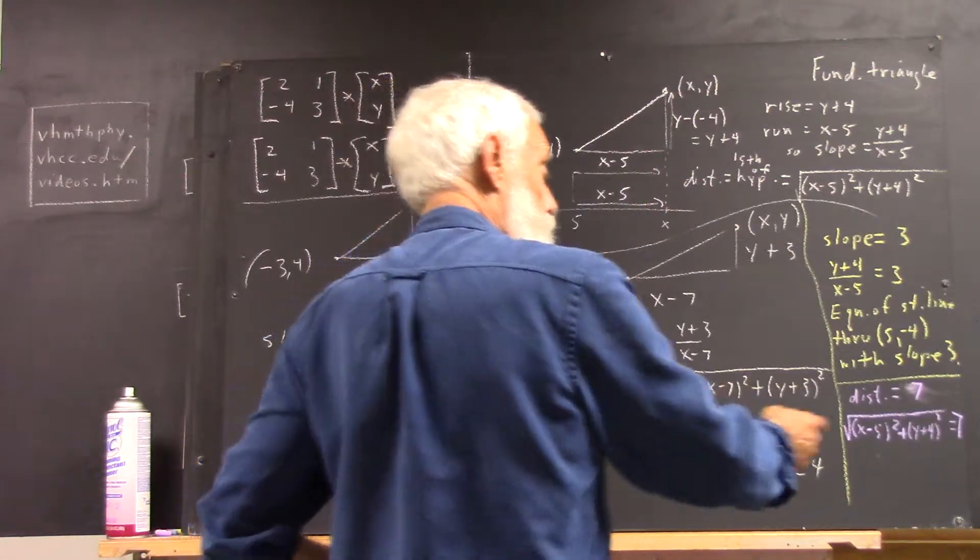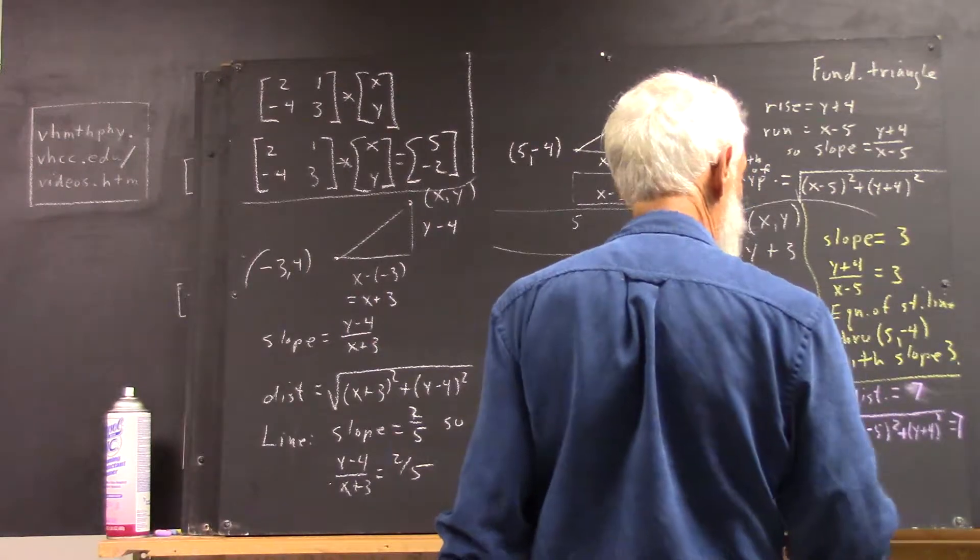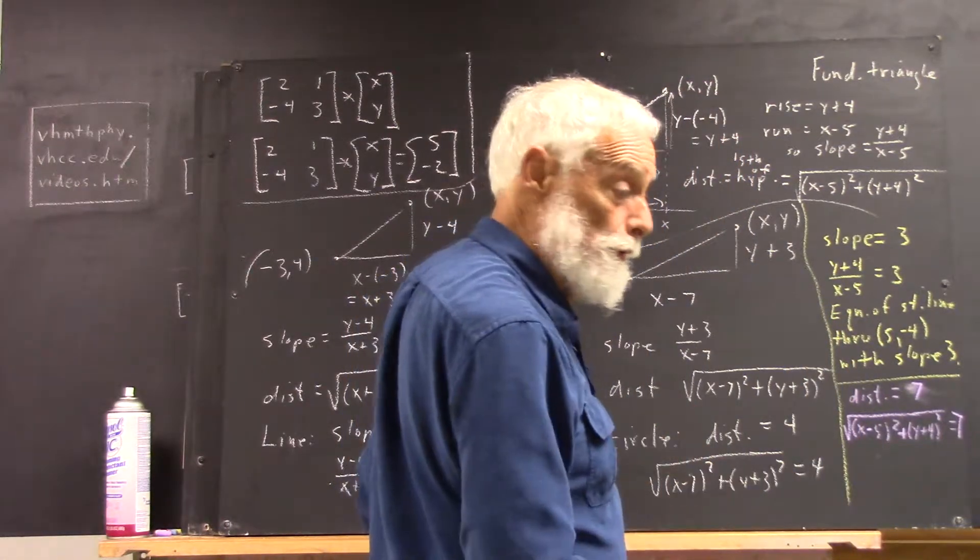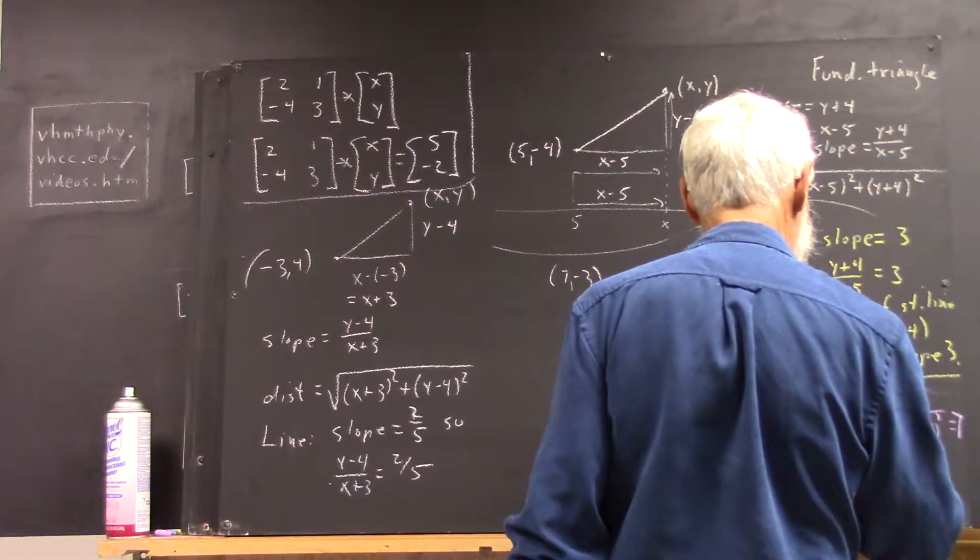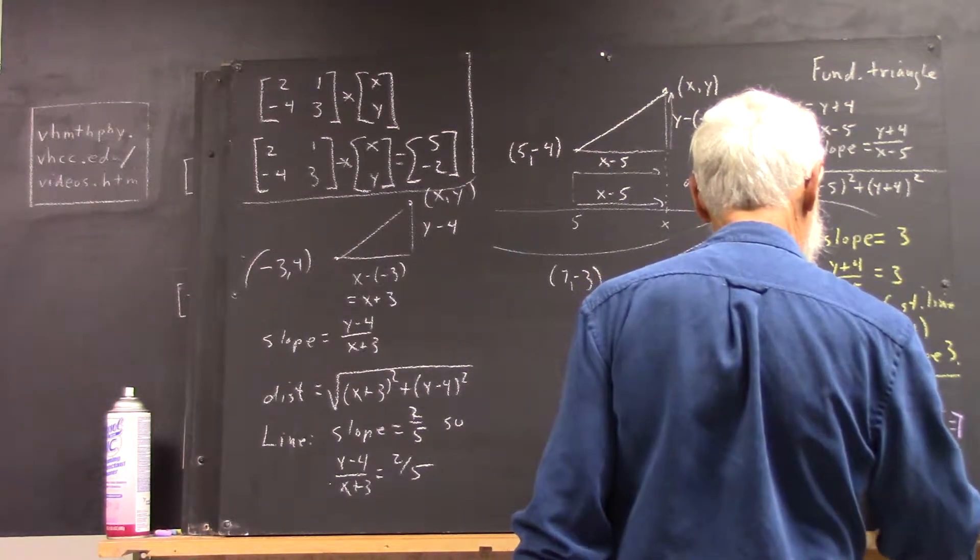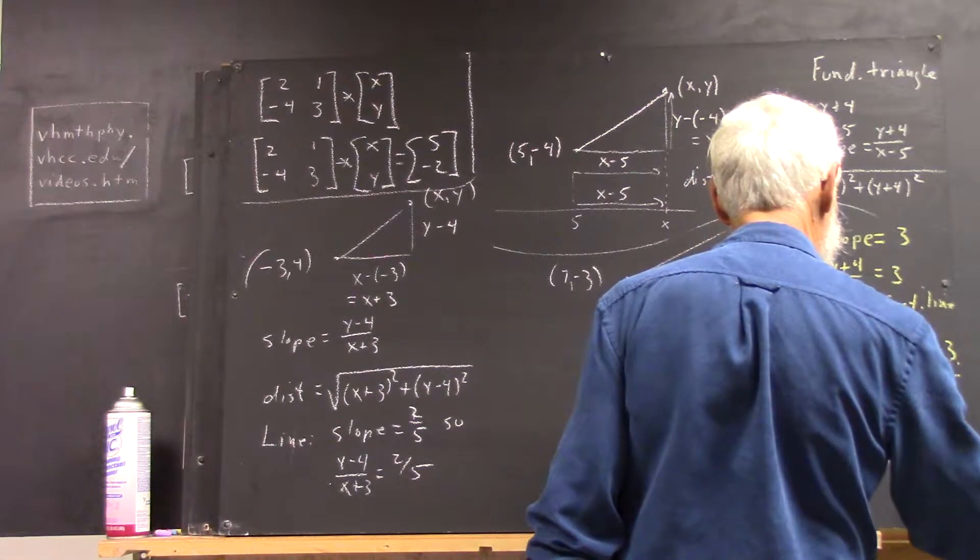Or, we could actually square both sides of this equation. The square of the square root of something is just that something, so if we square both sides, we're going to get x minus 5 squared plus y plus 4 squared equals 49.